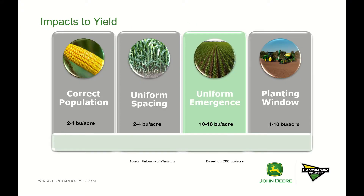And most importantly, yield. Based on a study done by the University of Minnesota on the 200-bushel-per-acre plot, these four things contributed to impacts on yield. The biggest one was uniform emergence at 10–18 bushels to the acre. Downforce plays an integral part in uniform emergence, being able to place the seed at the same depth all the way through the field, allowing those plants to emerge at the same time.